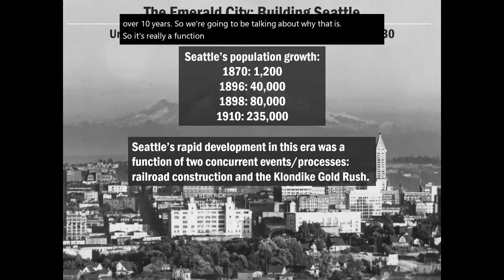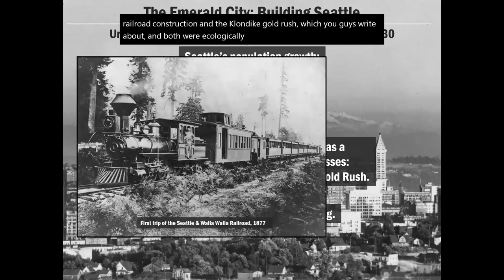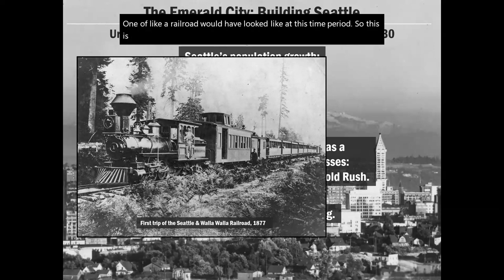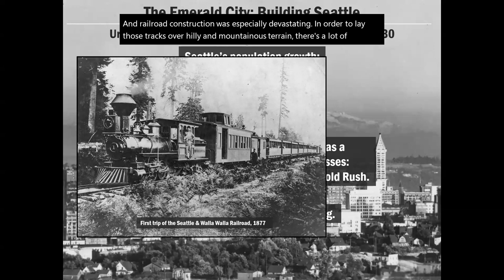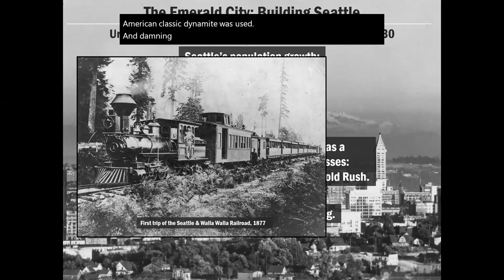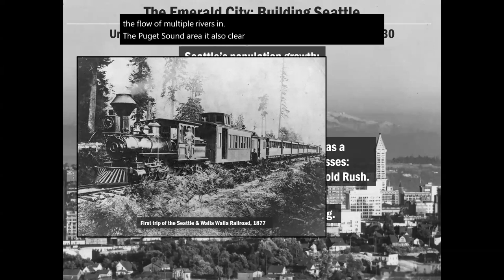Seattle's explosive growth is really a function of two concurrent events and processes: railroad construction and the Klondike Gold Rush, which you read about — both were ecologically devastating. Here's a representation of what a railroad looked like at this time — this is the first trip on the Seattle and Walla Walla Railroad in 1877. Railroad construction was especially devastating: dynamite was used to lay tracks over hilly and mountainous terrain, and damming altered the flow of multiple rivers in the Puget Sound area, while forests were clear-cut.